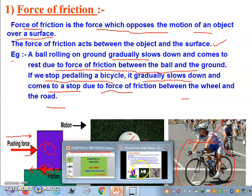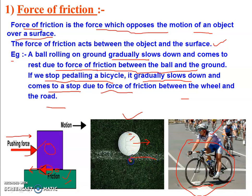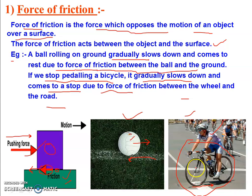So these are the two examples of force of friction. In the first example, the ball is rolling on the earth's surface and after some time it gets stopped because an opposing force reduces its speed. In the second example, the cyclist stops pedaling and after some time the cycle gets stopped. This is the force of friction.